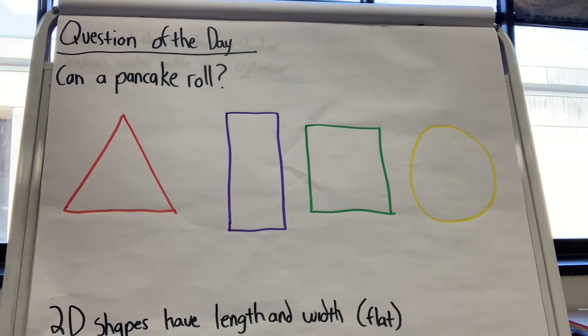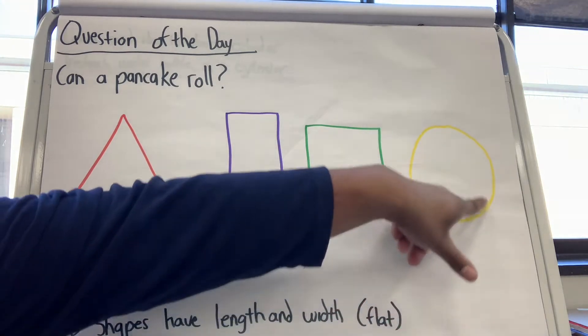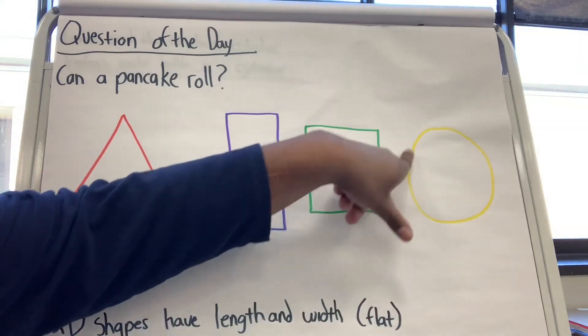A square has four equal sides. So all the sides are equal on the square. But a circle has one length. It's continuous.